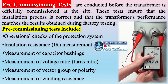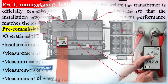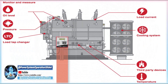Emergency tests are conducted on-site to identify and address issues or damages in transformers during operation. These tests may include measuring high temperatures despite efficient ventilator operation, checking winding resistance, and analyzing the oil used for cooling the transformer.